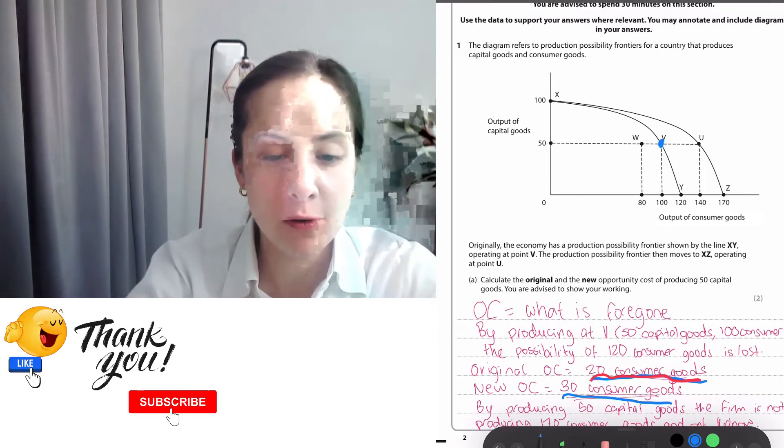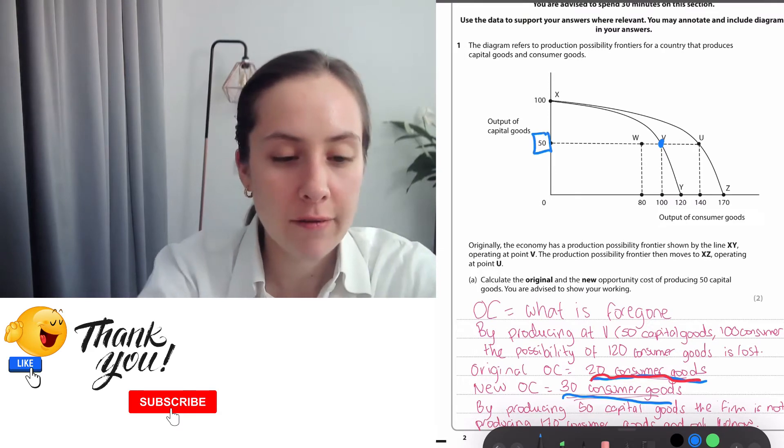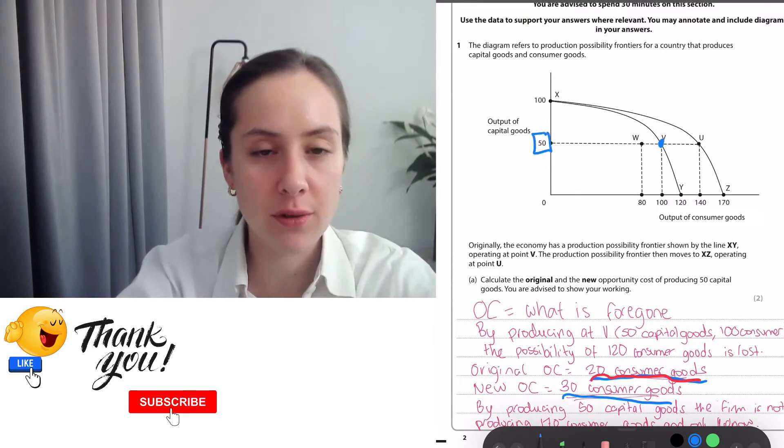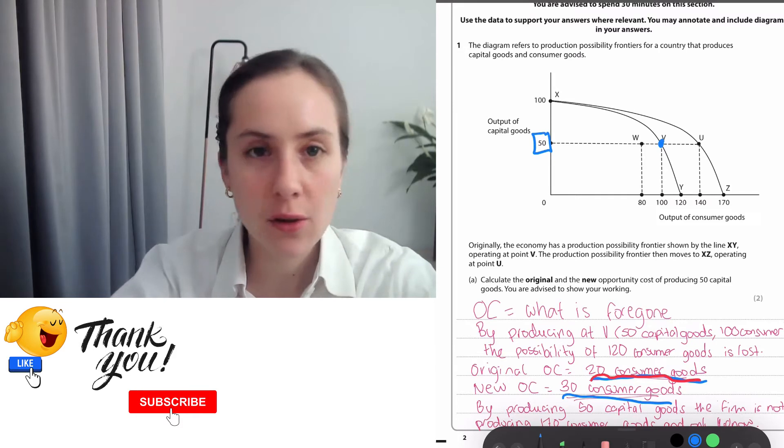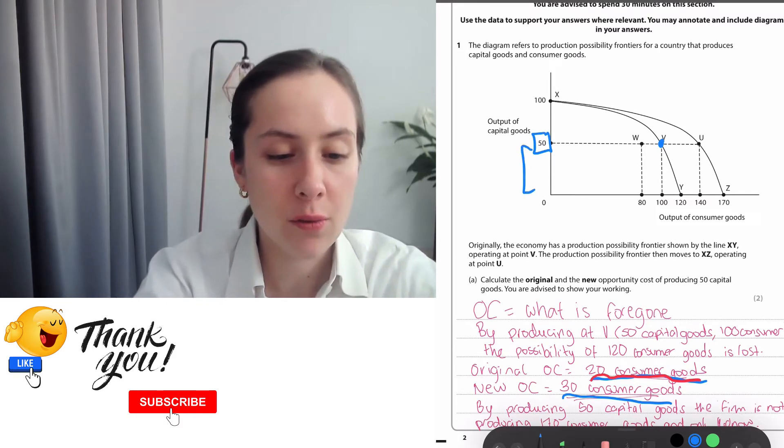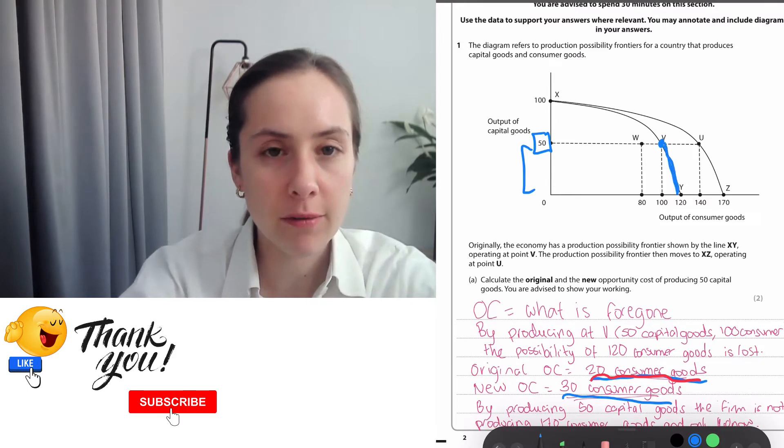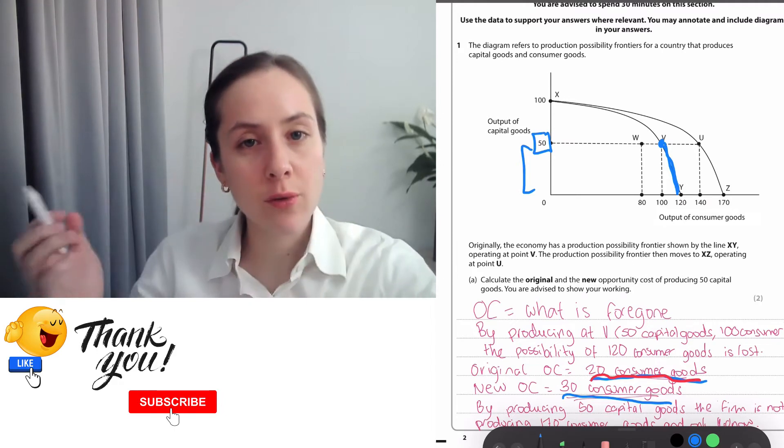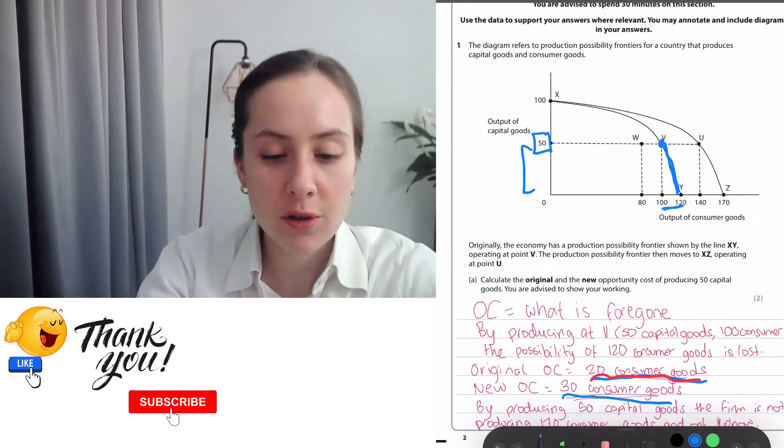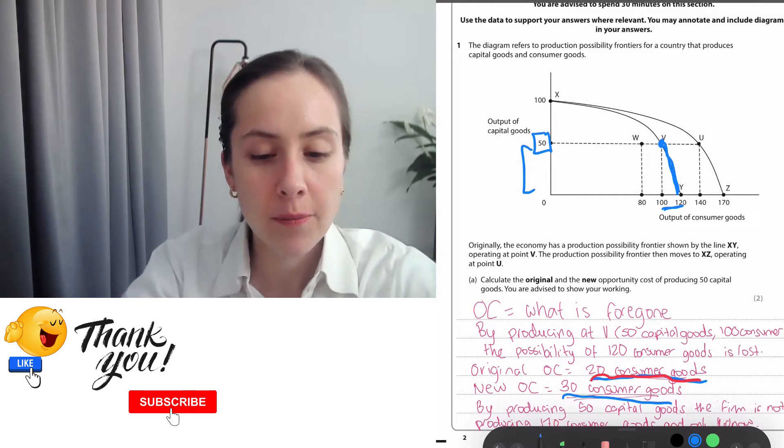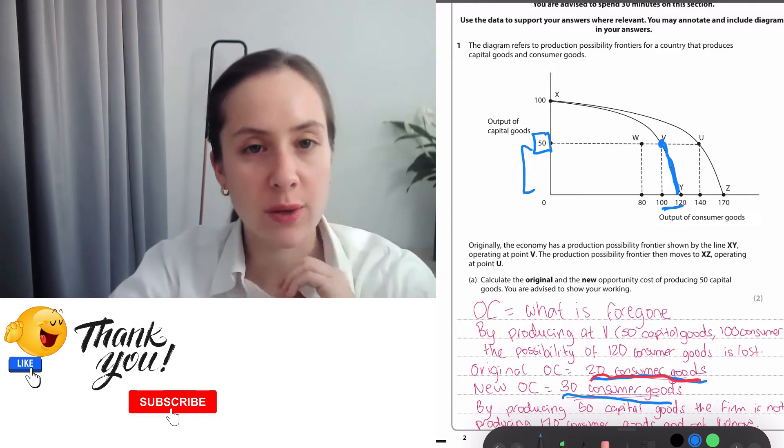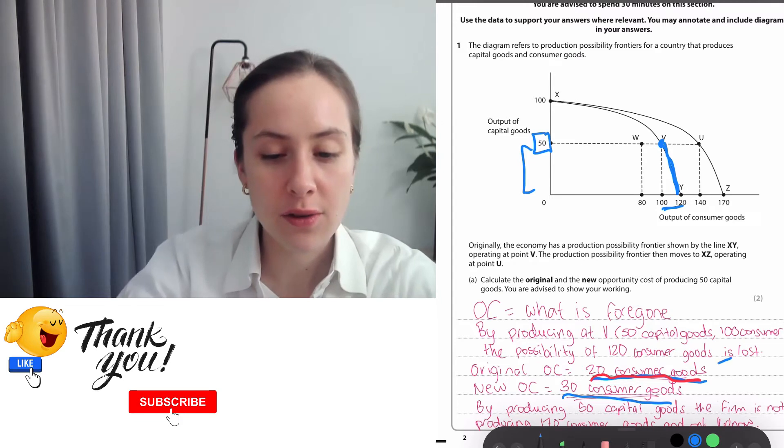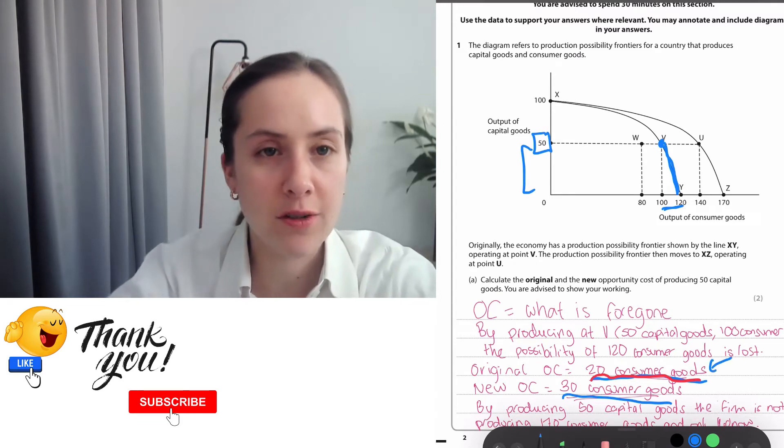Before and afterwards, so before we're told we produce at V. At V, we have to produce 50 capital goods, so because we have to produce 50 capital goods, we can no longer produce anything lower than 50 capital goods. We can no longer produce anywhere on this PPF, and because of that we have also sacrificed the opportunity of producing any of these consumer goods. Therefore, the opportunity cost is all those consumer goods that we lost out because we had to produce 50 capital goods. So that is 20 consumer goods, and that is the first opportunity cost.